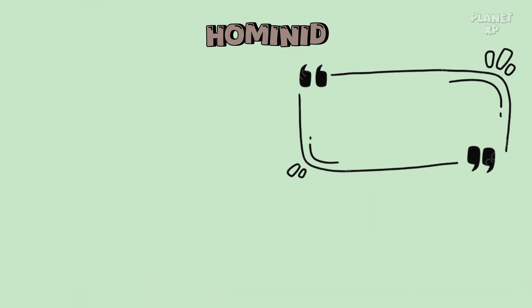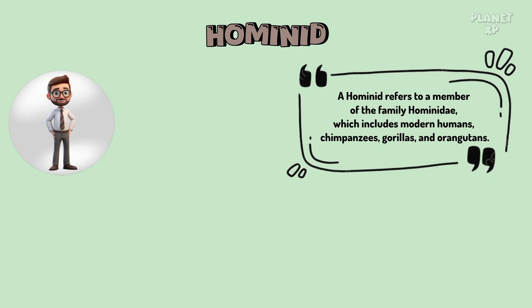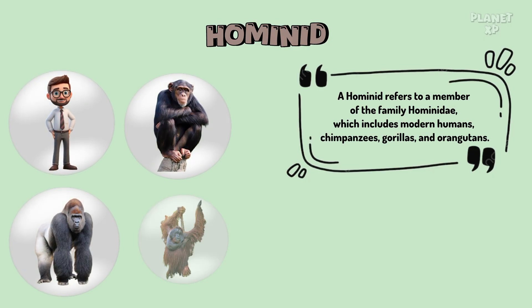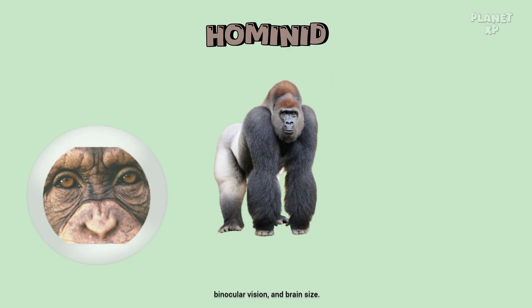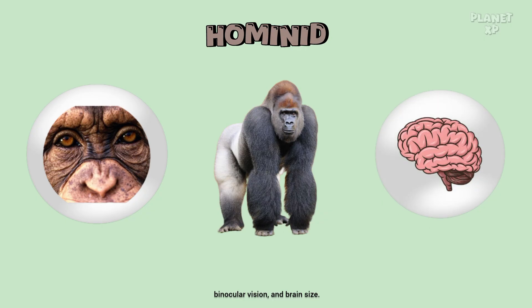What is a hominid? A hominid refers to a member of the family Hominidae, which includes modern humans, chimpanzees, gorillas, and orangutans. This group is characterized by their upright posture, binocular vision, and brain size.